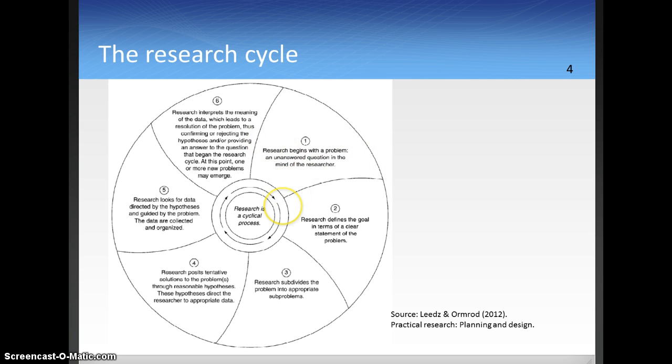We then, in a second step, define a goal in terms of a clear statement of the problem. This is our research question. If the research question is really large, we further subdivide this question into further sub-problems. Let's say that our research question is: how can we improve education in the United States? Huge topic, huge question. We can then further subdivide this question into different areas, different elements.